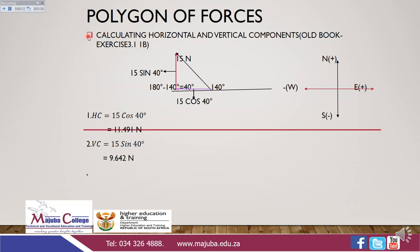Here we have to calculate the magnitude of the horizontal and the vertical component. We are given the 50 N force, which we are going to take as our resultant force or hypotenuse side. And we are given this angle, which is equal to 140 degrees. We have to do construction so that we can have the force on the horizontal plane and the force on the vertical line.